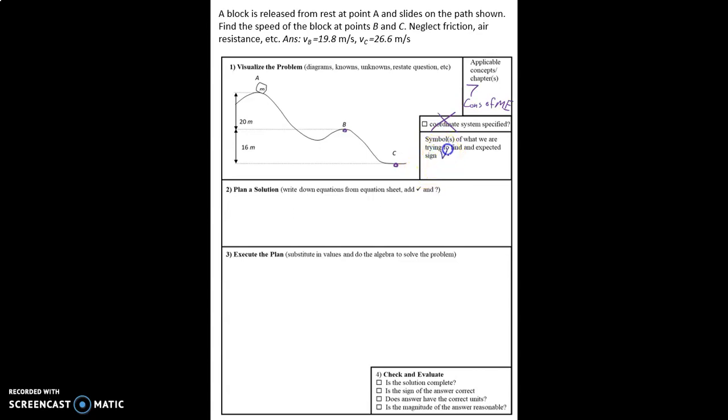A symbol of what we're trying to find. That would be V sub B and V sub C. Those are speeds. I know that says V, but V is not for velocity. It's not the vector form of it. It's the magnitude of the velocity. Speed and velocity both have units of meters per second.